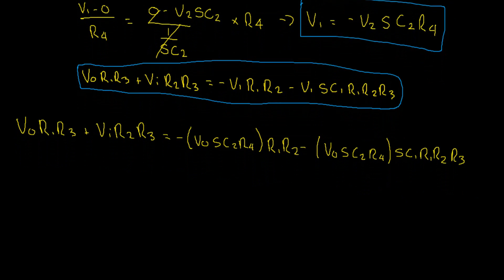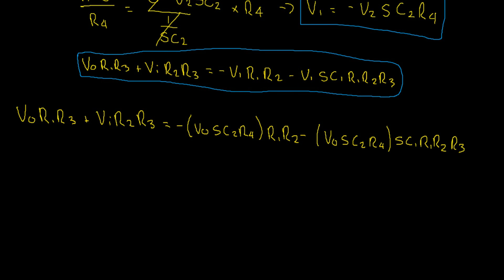So I know this is looking a little bit messy now, but the only thing left to do is simply expand our brackets and then rearrange for VO divided by VI. First, let's move our VO term to the right-hand side of the equation. This gives us VI R2 R3 equals, while we're doing this, let's also take the negative term out the front of all of our VO terms. We'll also expand our S terms, negative, then inside the brackets, VO SC2 R4 R1 R2. That's simply our first term. Plus, remember, the negative distributes, VO. We'll also expand these brackets here.